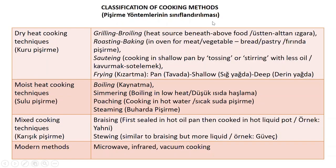Cooking is classified into three main methods according to the type of heat transfer: dry heat cooking, moist heat cooking, and mixed cooking. Here you see a table summarizing traditional cooking methods. Dry heat cooking examples are grilling, broiling, roasting, baking, sautéing, and frying — in pan, shallow pan, or deep pan. Moist heat cooking techniques include boiling, simmering, poaching, and steaming. Mixed techniques include braising and stewing. There are also modern methods: microwave, infrared, and vacuum cooking.